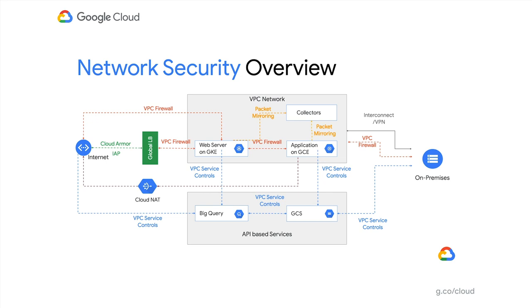Firewalls apply at the VPC level and can be used to customize access for north-south traffic as well as east-west traffic into, out of, or through VPCs. Firewalls are used to define VPC boundaries but can be as granular as per host. VPC service controls can be used to control access to and from GCP services and managed APIs, such as BigQuery or Cloud Storage, to or from the internet, GCP VPCs, or on-premise sources.